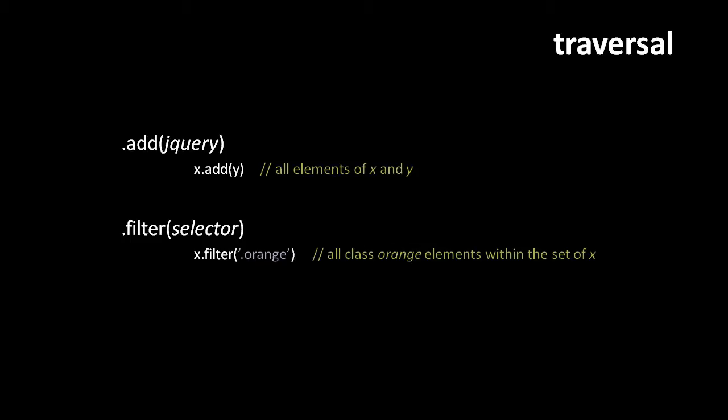Now we'll look at some of the more essential traversal methods. The add method takes a second jQuery object as argument and creates a new jQuery object containing the full set of objects from both. So calling x.add(y), where x and y are both jQuery objects, gives a new jQuery object with all elements included in both. This is a union — if x and y happen to contain some of the same elements, those don't appear in the new object twice. In fact, it's not possible in any circumstance to have a jQuery object contain the same element more than once.